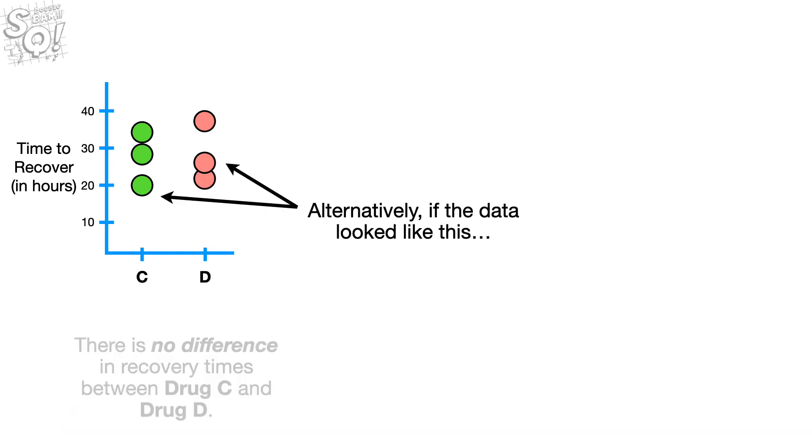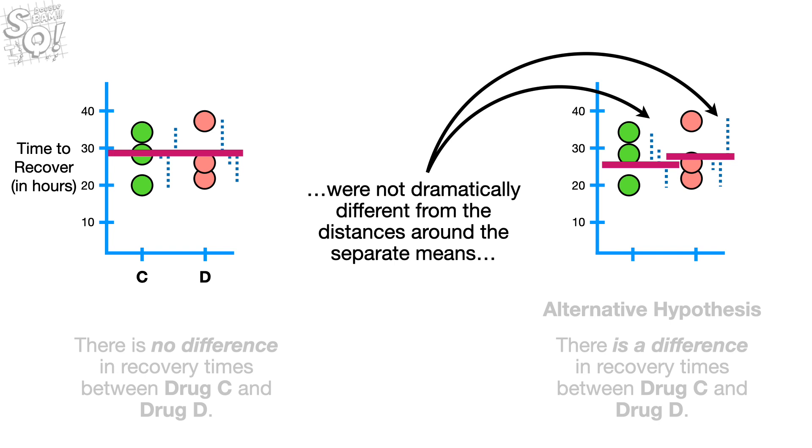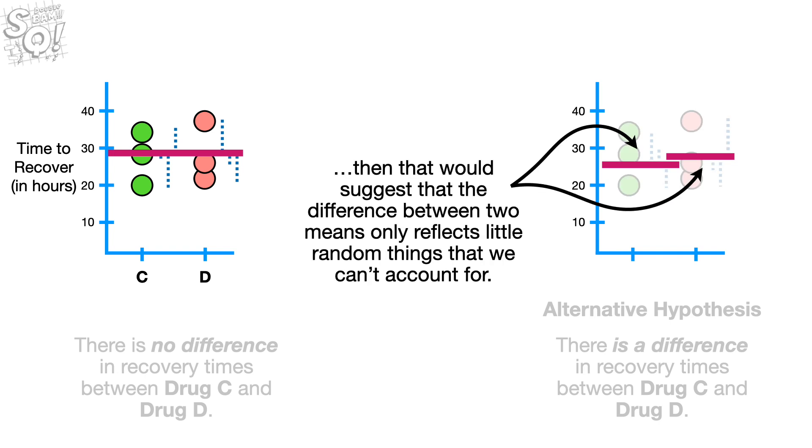Alternatively, if the data looked like this, and the distances from the single mean were not dramatically different from the distances around the separate means, then that would suggest that the difference between two means only reflects little random things that we can't account for.